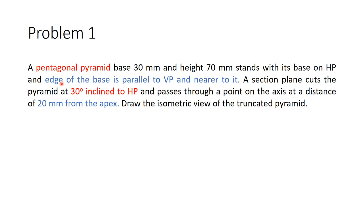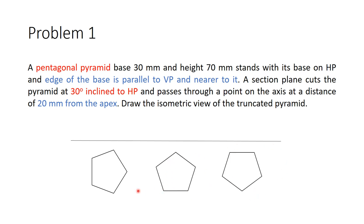Let us start with the top view. For a pentagonal pyramid where an edge of the base is parallel to VP and nearer to it, there are three possible orientations. In the first option, the base edge is not parallel — it is perpendicular to VP, so it is wrong. In the second option, the base edge is parallel but not nearer to VP, so that is also wrong. In the third option, the base edge is parallel to VP and nearer to it — this is the correct option.